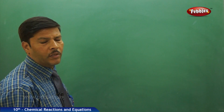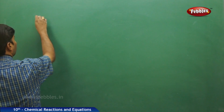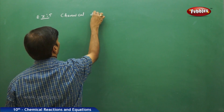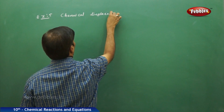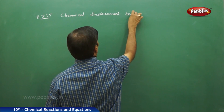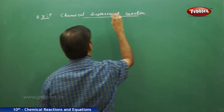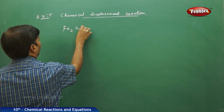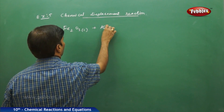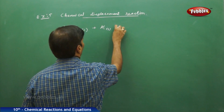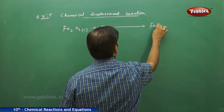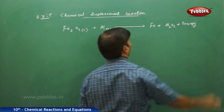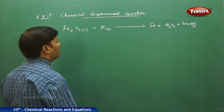Let us continue with two more examples in balancing of chemical equations. Example 5 is called a chemical displacement reaction. Here, if you take iron oxide Fe₂O₃ solid plus aluminum solid, it gives iron plus Al₂O₃ plus energy. This is a displacement reaction.